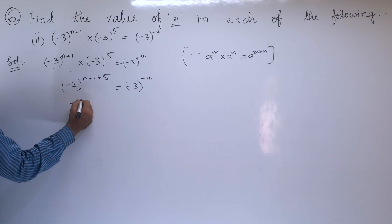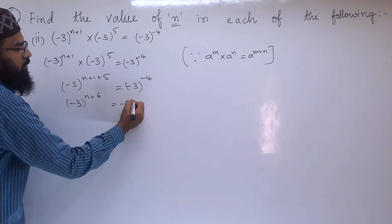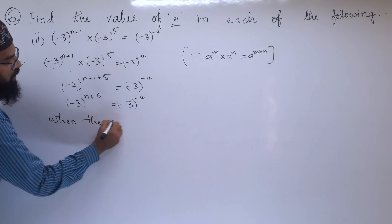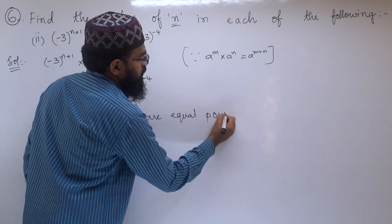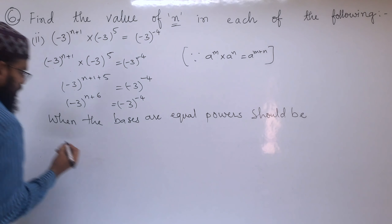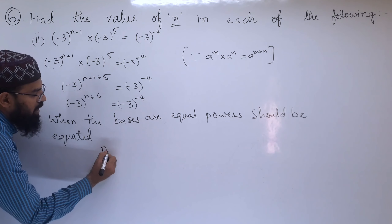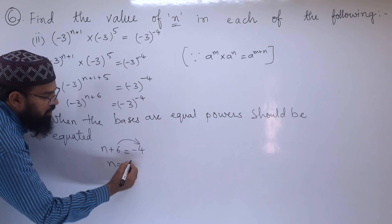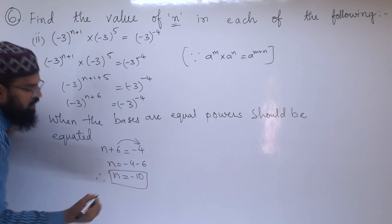Next, (-3)^(n+6) = (-3)^(-4). When the bases are equal, we equate the powers. So n + 6 = -4. The 6 goes to the other side and becomes negative: n = -4 - 6. Therefore, the value of n is -10.